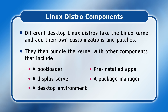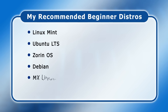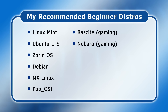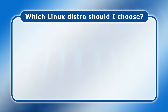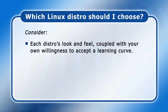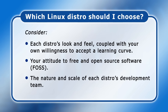If you're a Windows user looking for a desktop Linux distro that works out of the box for general computing, many excellent options are available. In my view, these include Linux Mint, Ubuntu LTS or Zorin OS, as well as Debian, MX Linux, or PopOS. If you're a gamer, you may also want to consider Bazzite or Nobara, or even a retro gaming distro like Commodore OS. However, here I'm going to focus on these six more general desktop distros, all of which can still be used for gaming. For beginners choosing between them, I'd suggest considering each distro's look and feel, your willingness to accept a learning curve, your attitude to free and open source software, and the nature and scale of each distro's development team.